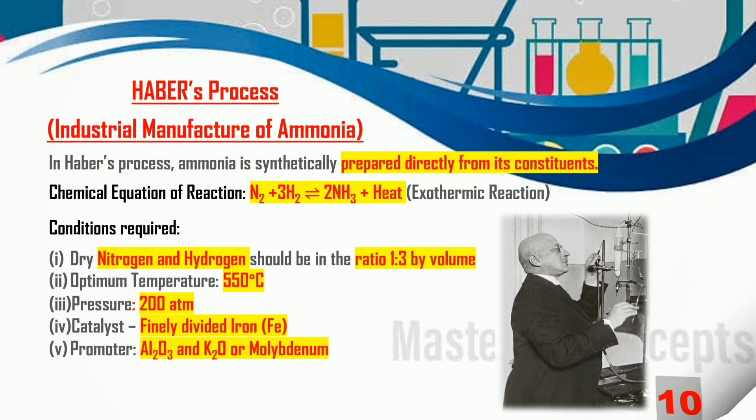The optimum temperature for Haber's process should be 550°C, the pressure should be maintained at 200 atmospheres, finely divided iron is taken as catalyst, and Al2O3 and K2O or molybdenum are taken as the promoter.